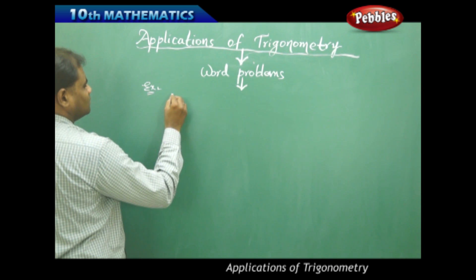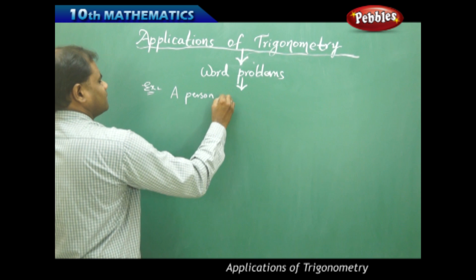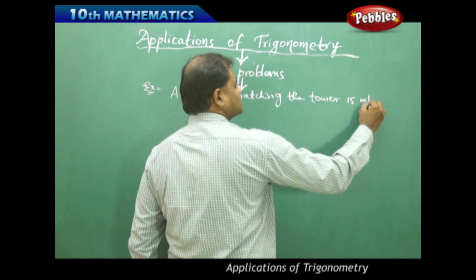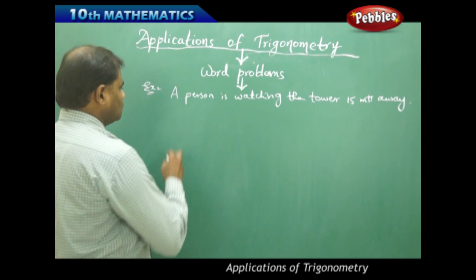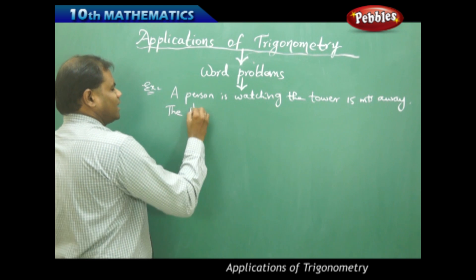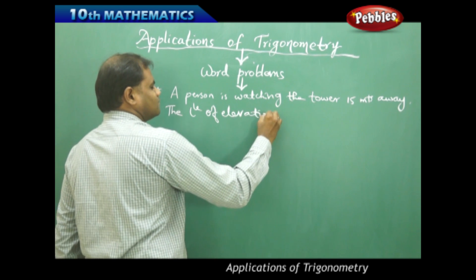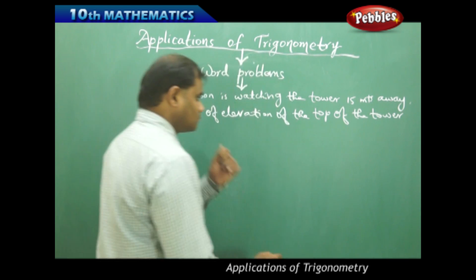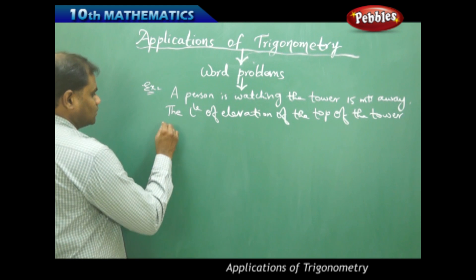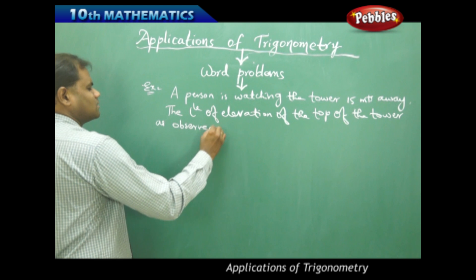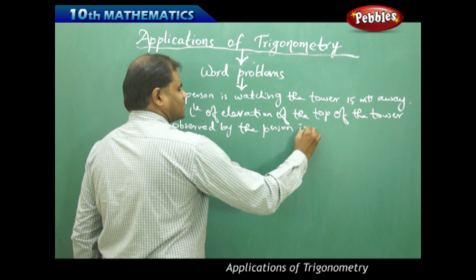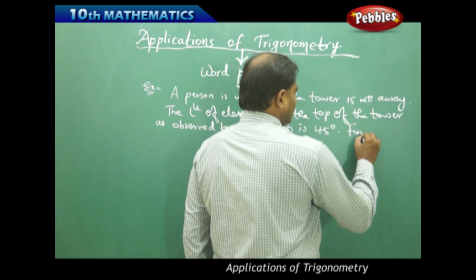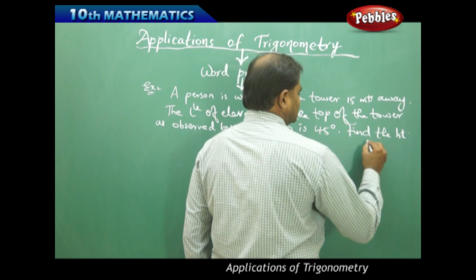A person is watching a tower 15 meters away. The angle of elevation of the top of the tower as observed by the person is 45 degrees. This is the minimum information given, through which we have to find ultimately the height of the tower.